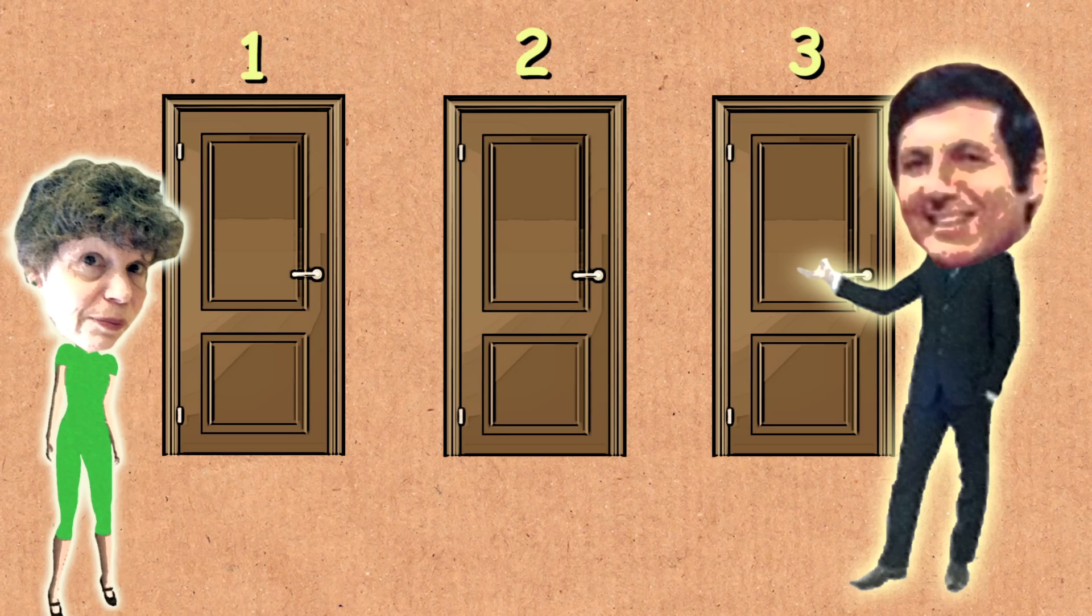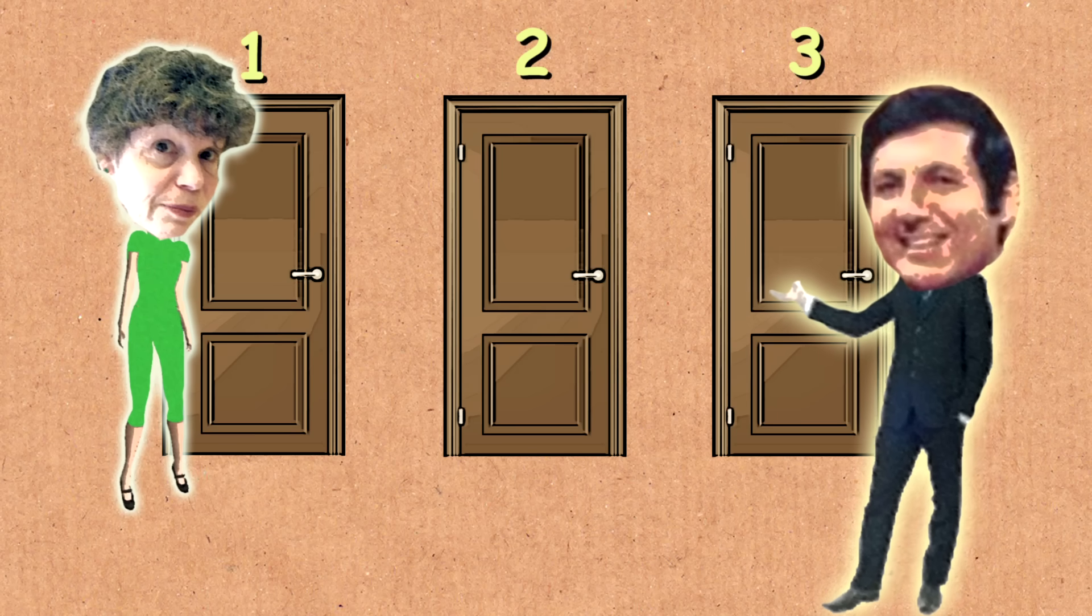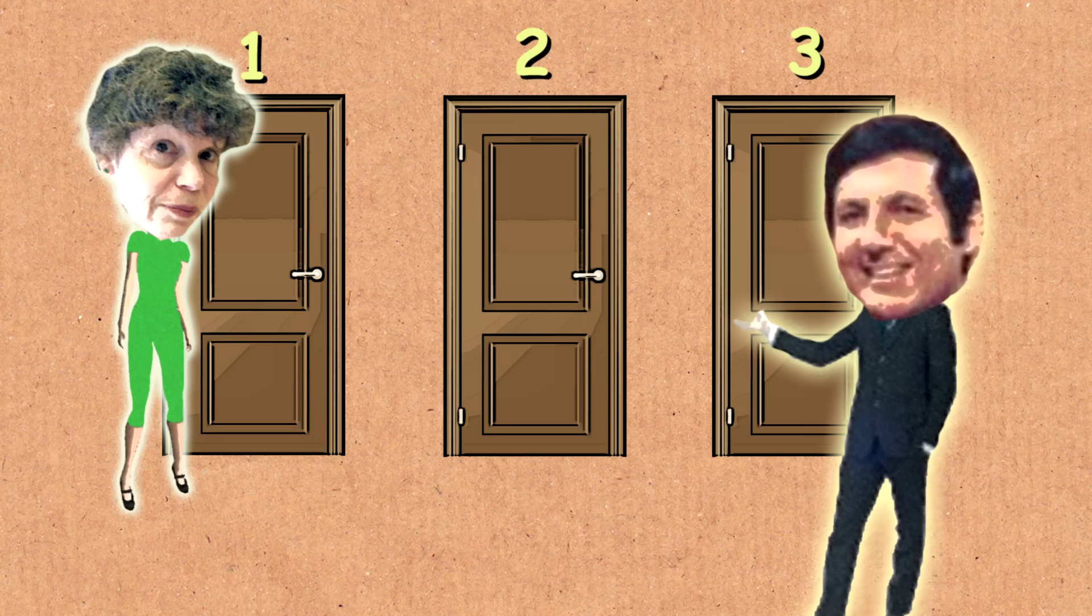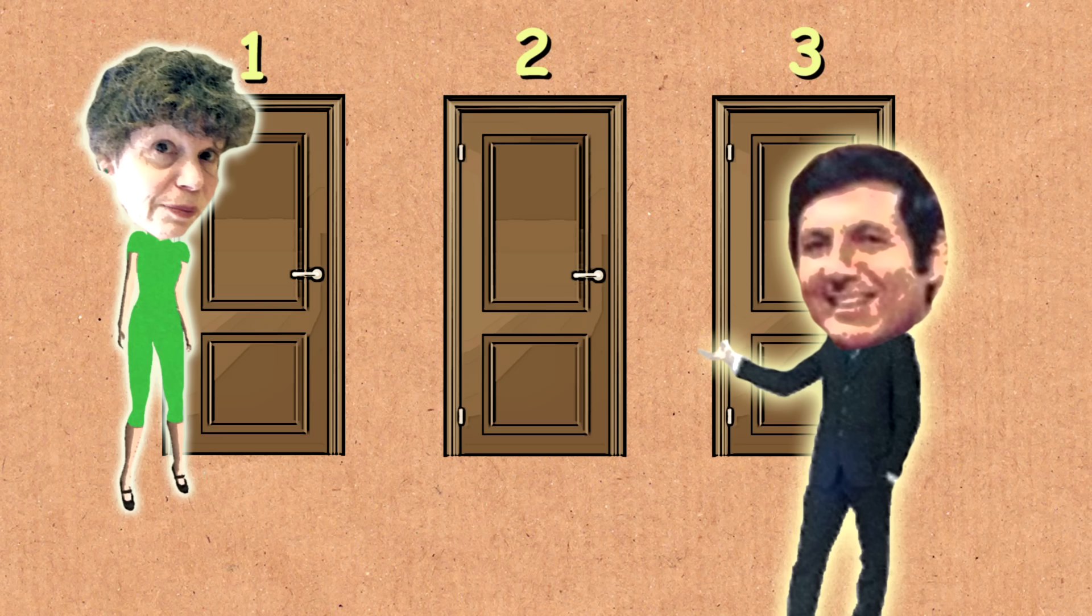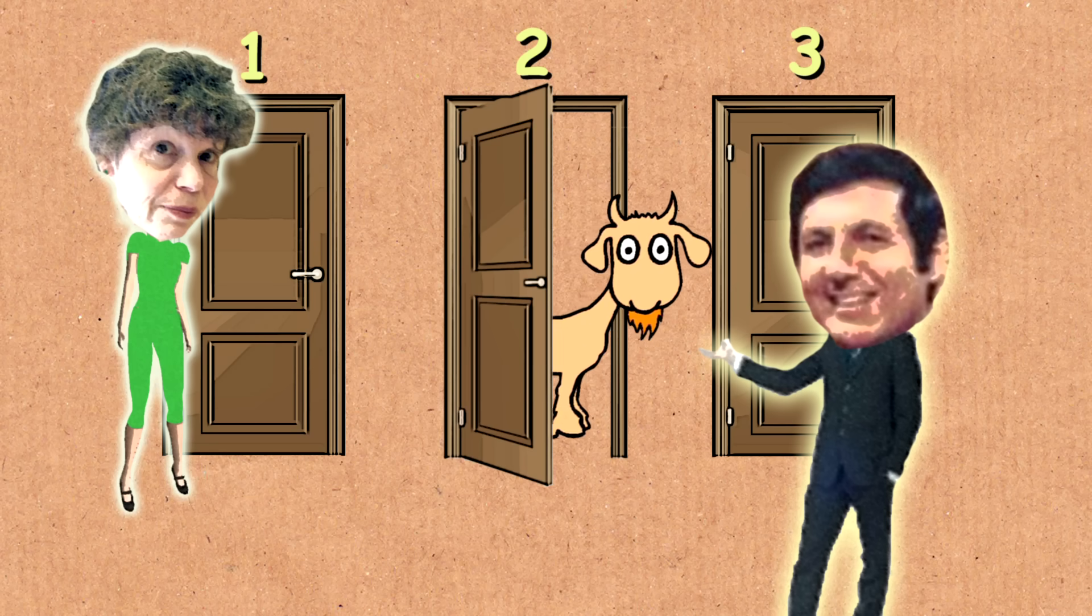So suppose you picked door number one. Monty would then do the same thing every week. He would go over to the two doors you didn't pick, two and three, and he would open one of them. Let's suppose he opened door number two. And the door that Monty opened would always have behind it a zonk. So he knew. Well, he knows everything, right? He's the game show host.